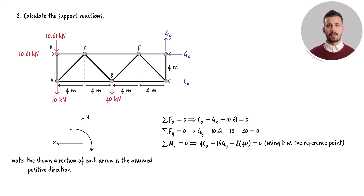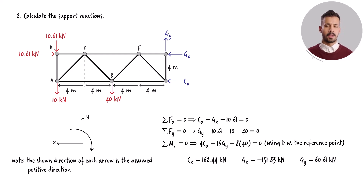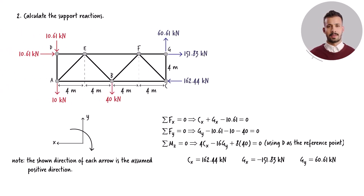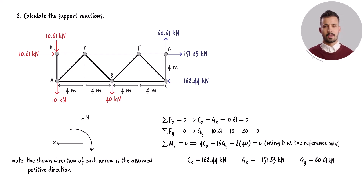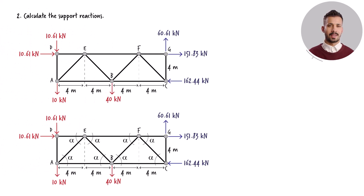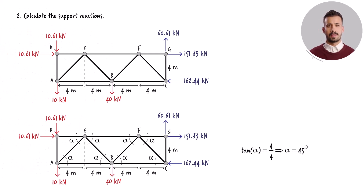Solving these three equations for the unknown forces, we get the support reaction values. Let's revise the truss's free-body diagram to include the magnitudes of the support reaction forces. This is also a good time to determine the angle that the inclined members of the truss make with the horizontal axis. The angle is 45 degrees.